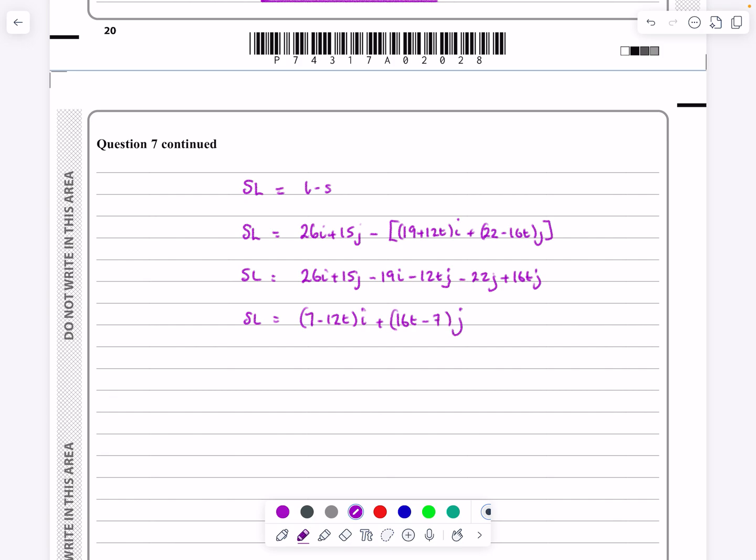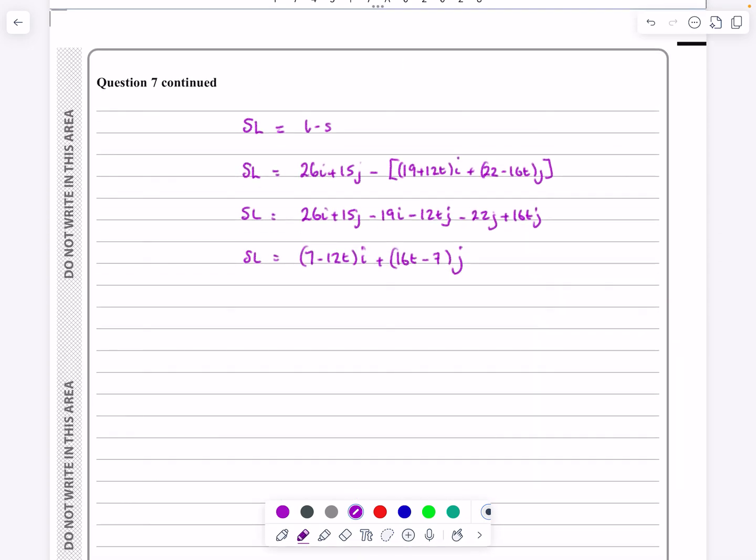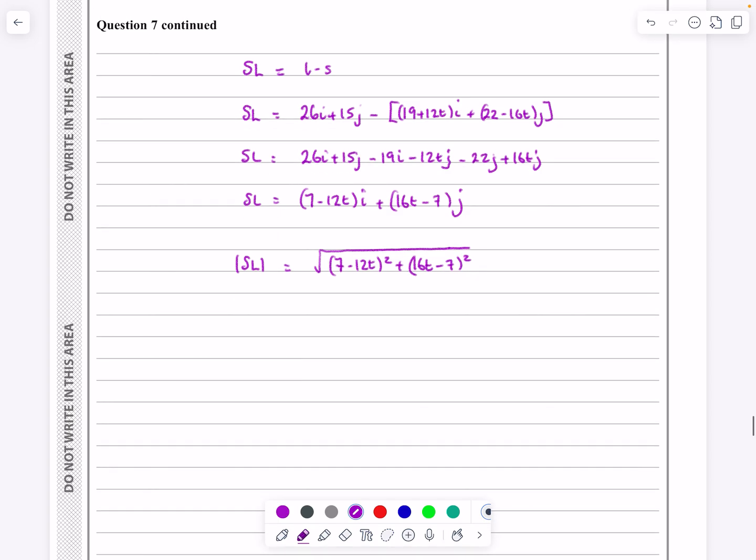Why is that useful to me? Because now what I can do for this first part is it says can you find the value when s, when it's closest to the lighthouse, means I want to find the minimum length of that. How am I going to find the minimum length of that? Let's get a representation for the length. The length of SL is, using that same idea with Pythagoras, is just going to be the square root of 7 minus 12t squared plus 16t minus 7 squared. And we do this technique a lot for finding the minimum distance between two points. Let's tidy all that up. It's going to be the square root of, and then whatever that all works out to be. You take your time over it. I've got it as being 49 minus 168t plus 144t squared and then with the other part, 256t squared minus 224t plus 49.